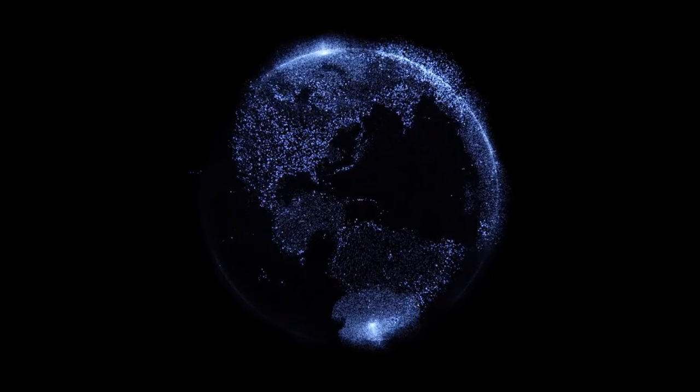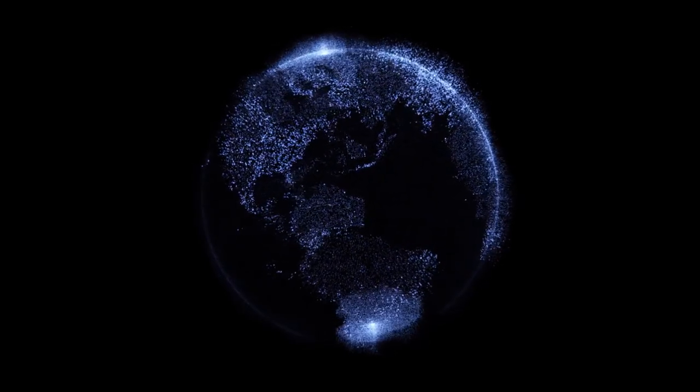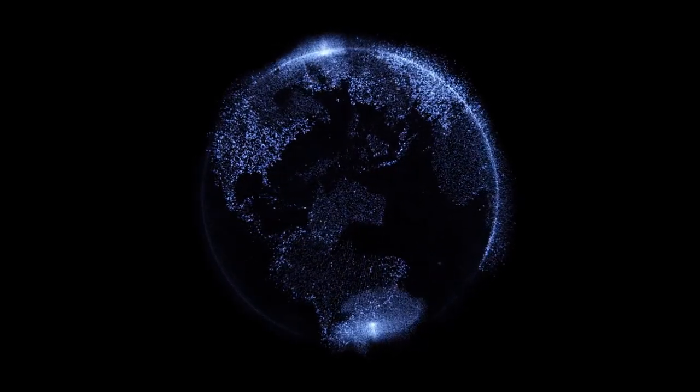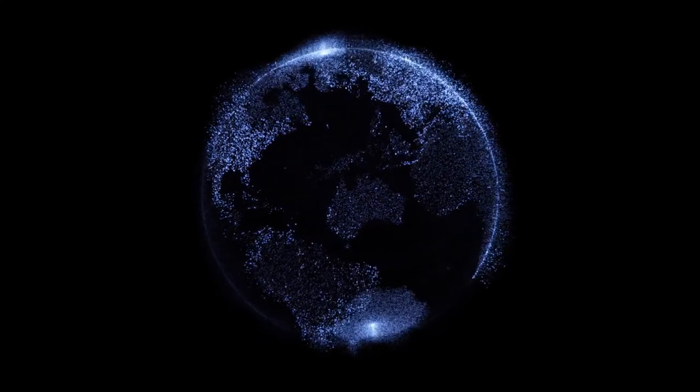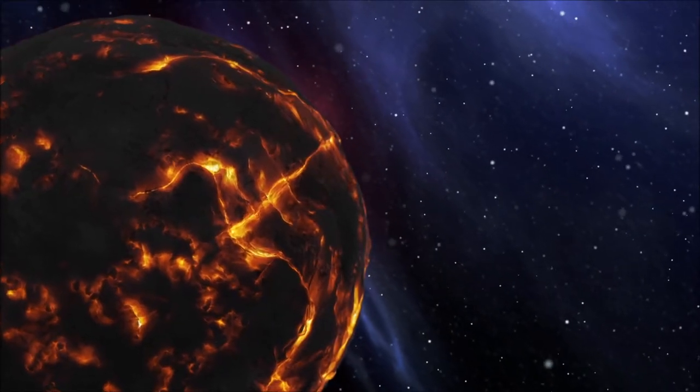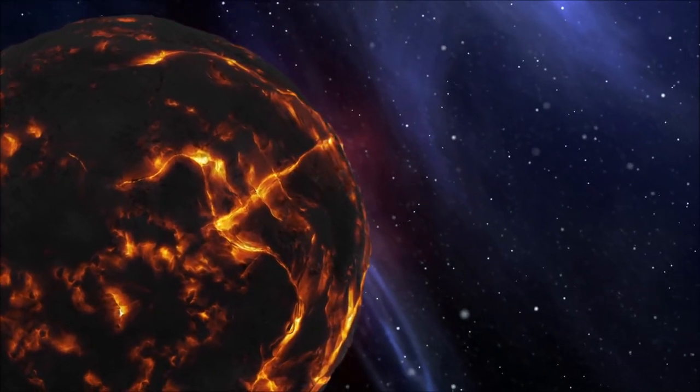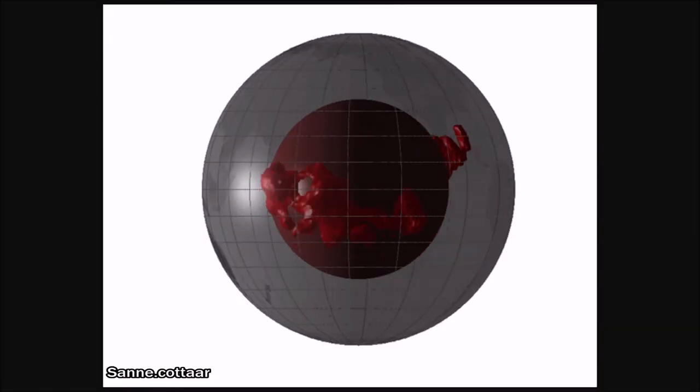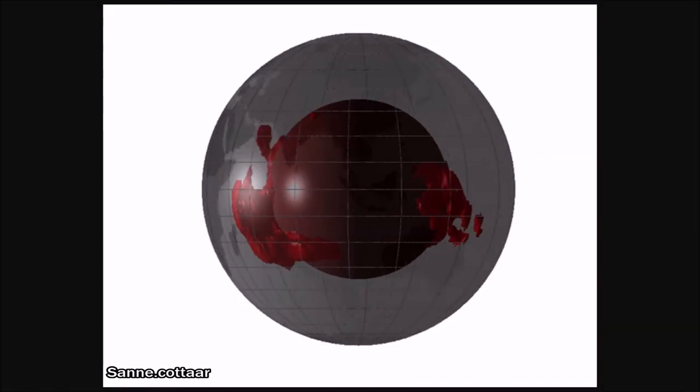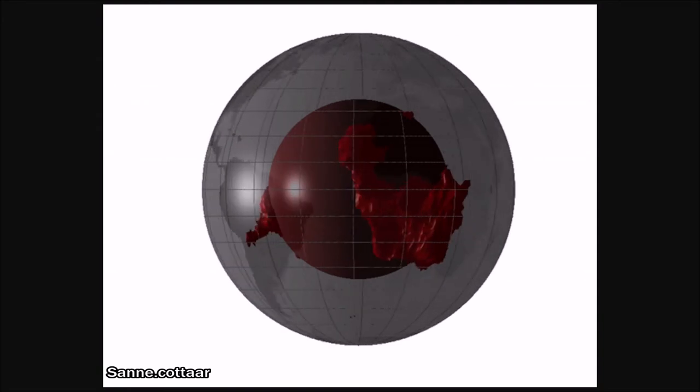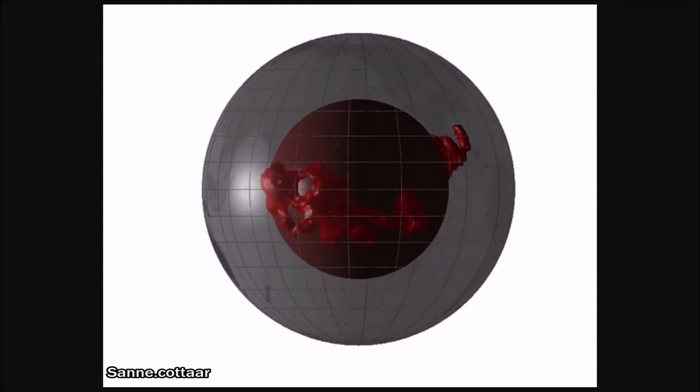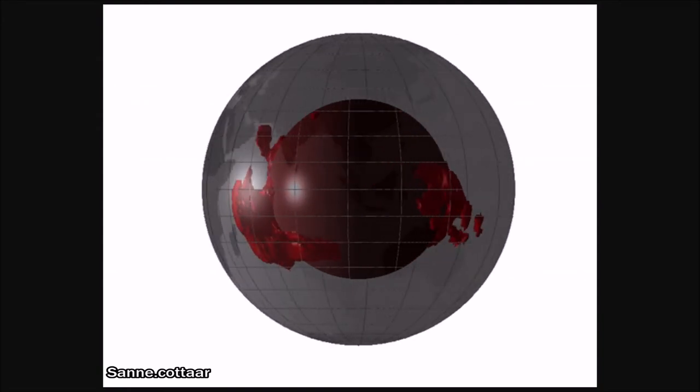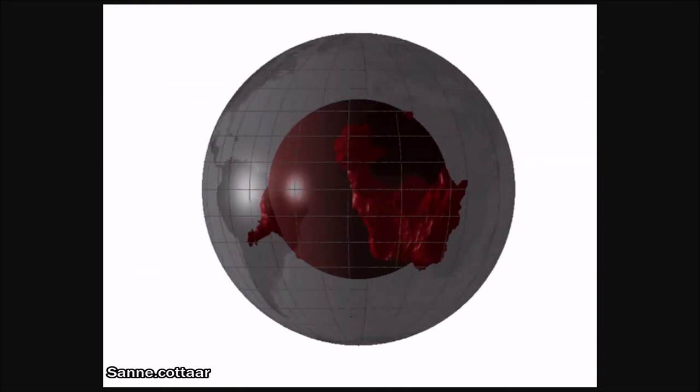In simulations, scientists were able to show that the denser rock deposited inside of the Earth from such a collision would end up near the core, in a similar formation to the LLSVPs. It would explain why the density and composition of the rock is different from the normal Earth rock surrounding it, but more research is needed on this.